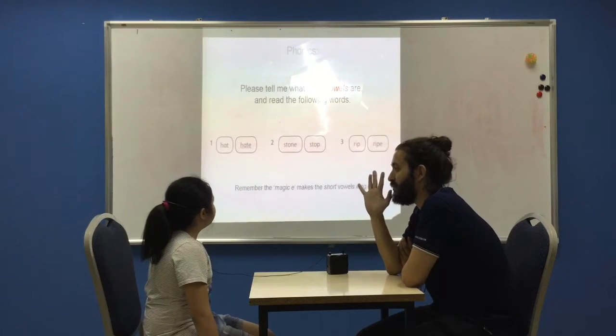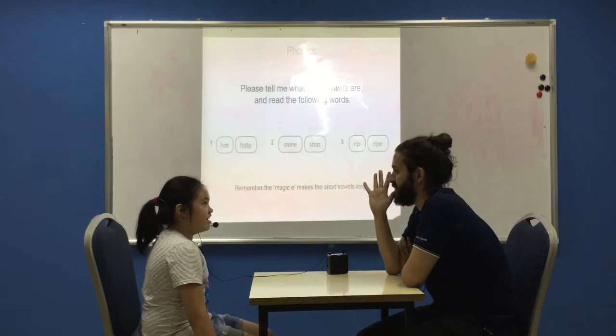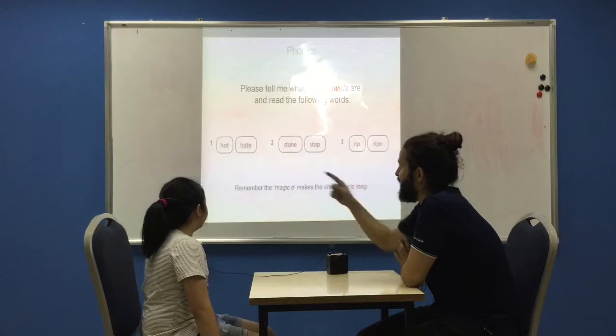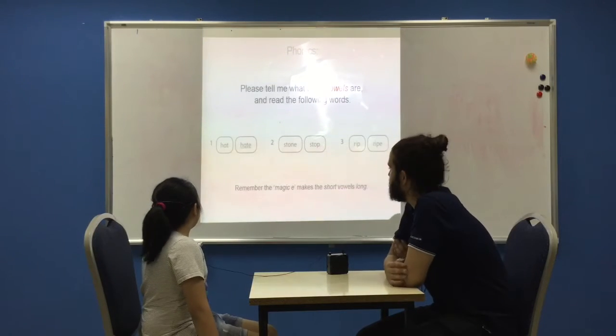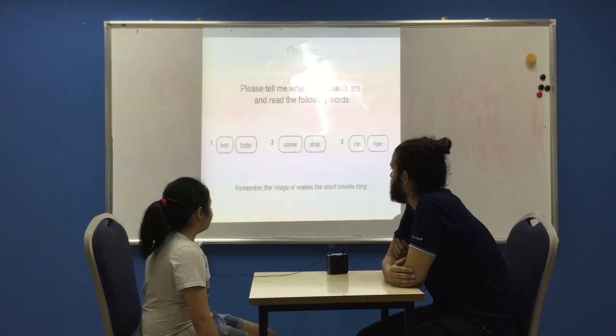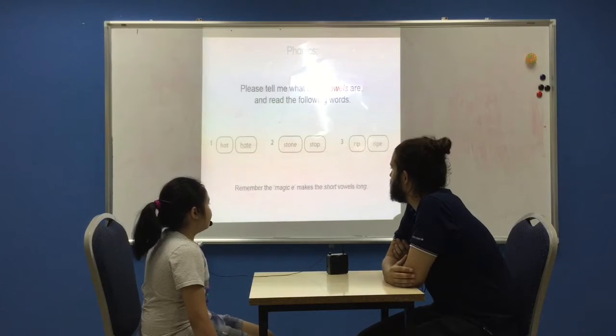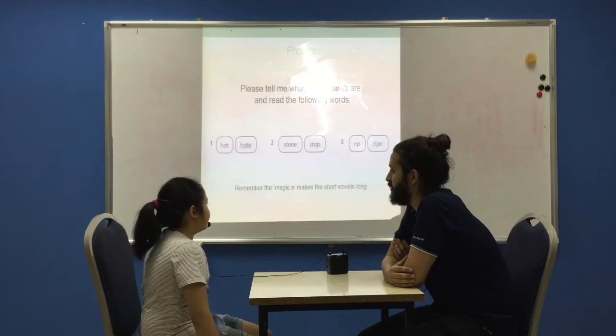Can you tell me what the five vowels are? A, E, I, O, U. Good. And can you read the six words? Hats. Hits. Storm. Stop. Rip. Run. Very good.